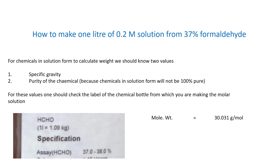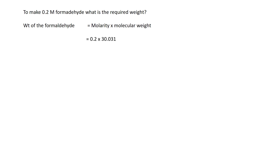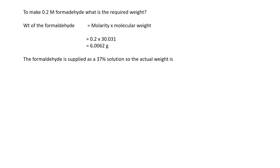To make a 0.2 molar formaldehyde solution, the required weight is calculated as: weight = molarity × molecular weight. We are preparing 0.2 molar solution for one liter, so 0.2 × 30.031 = 6.0062 grams. This is the weight required for a 0.2 molar solution in one liter.